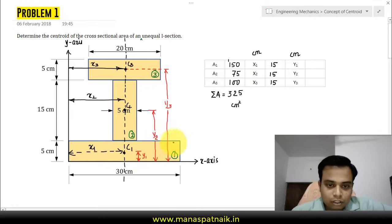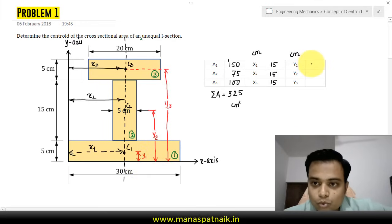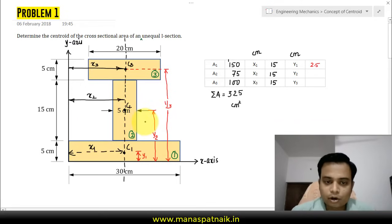How much is y1? This is how much in totality from here till we reach here, that's 5. So half of 5 is 2.5, so y1 is nothing but 2.5. Pretty simple, straightforward.